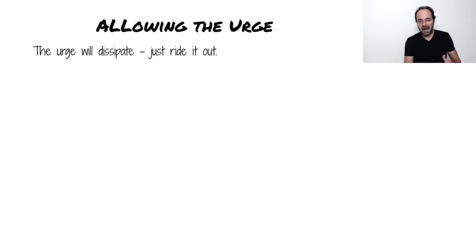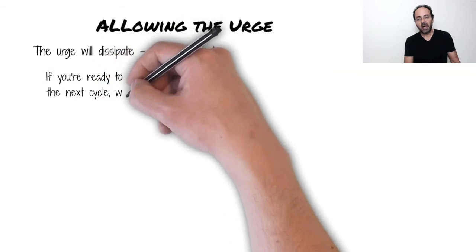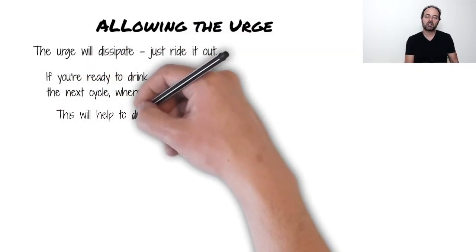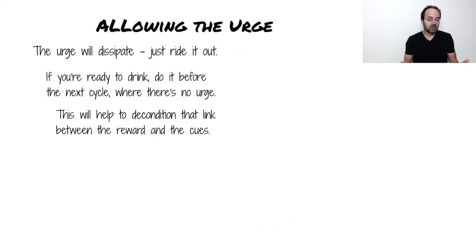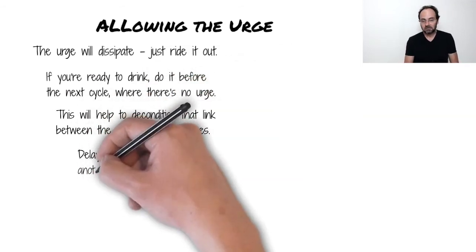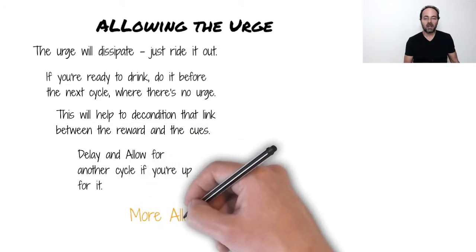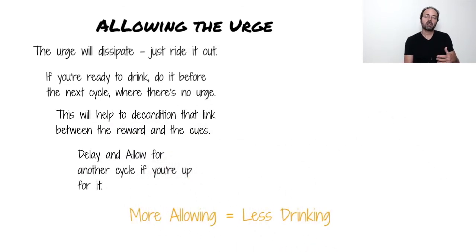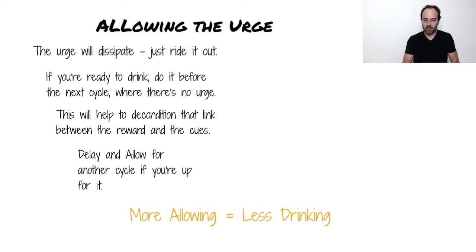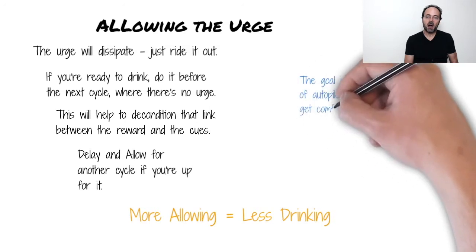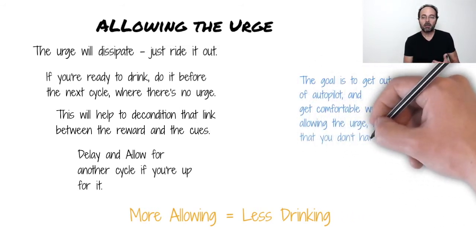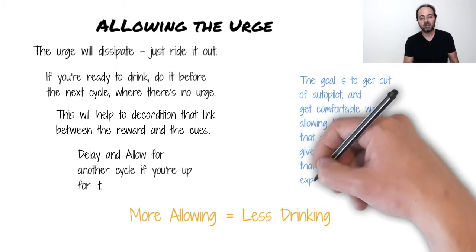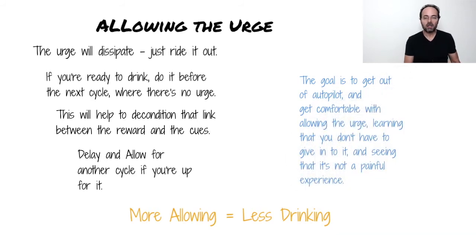Once you ride it out, it dissipates. At this point, if you want to drink, this is a good time — by drinking outside of the influence of the urge, you're doing more to decondition the habit cycle. Of course, you could continue to delay your drinking through another urge cycle, and the more you delay and surf, the less you'll drink. But the main objective, especially in the early stages, is not to get some huge reduction in your drinking. You're not trying to solve this issue all in one night or one week. The goal is to first get yourself out of that autopilot mode, get comfortable with allowing the urge, learn that you don't have to give in to it, and see that it's not actually a painful experience.